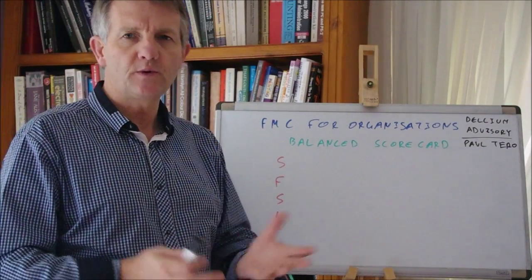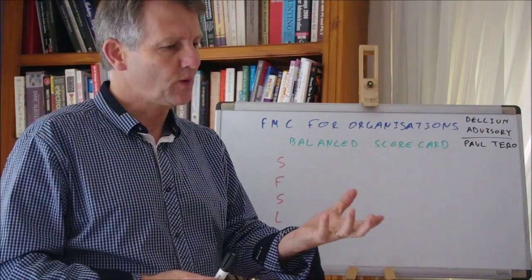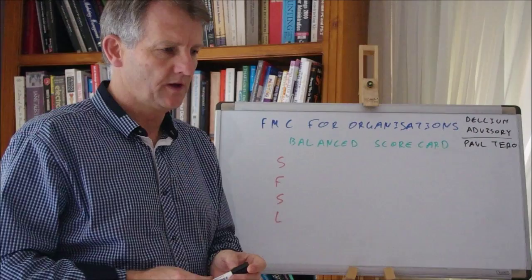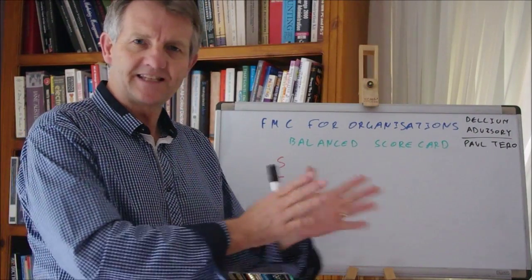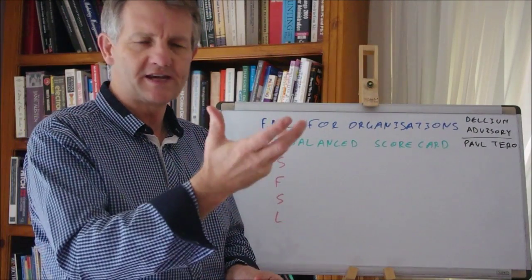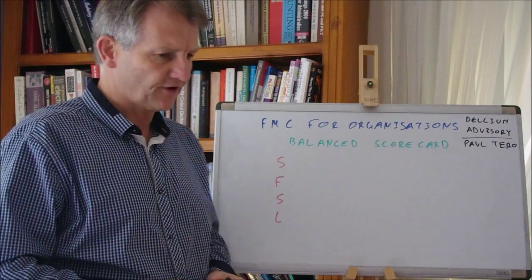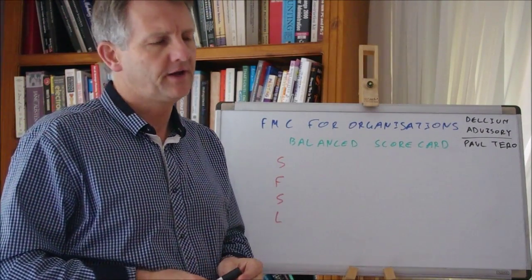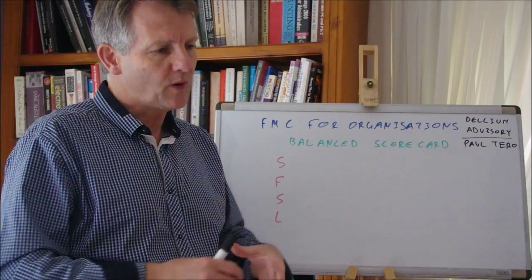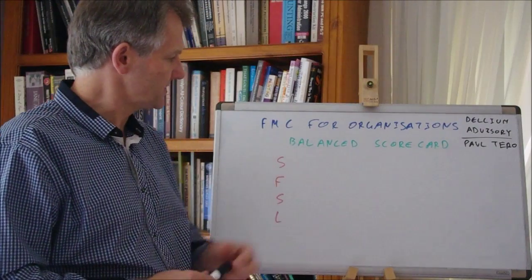In this session, we want to cover off the Balanced Scorecard. It's a way of scoring the performance of your organization. For some people, it's just all about the finance. For other people, it's all about the customer and how well you're treating the customer. Whereas this framework, this Balanced Scorecard that has been around since the late 80s, early 90s, is a way of looking holistically at your organization. So, let's get into it.